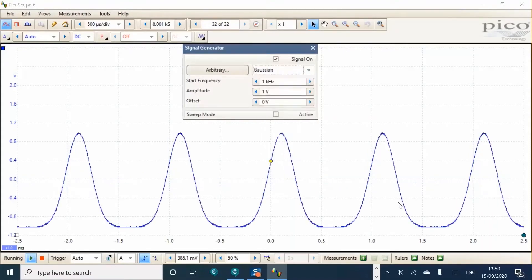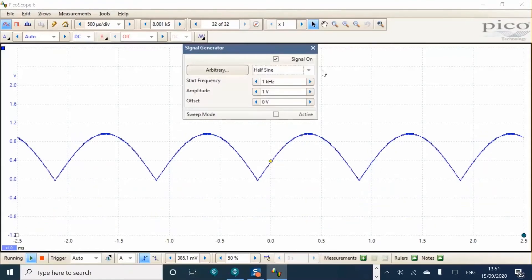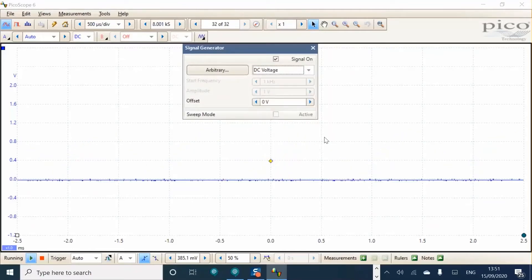There's also Gaussian, half sine and DC voltage. Great, so let's go back to sine.